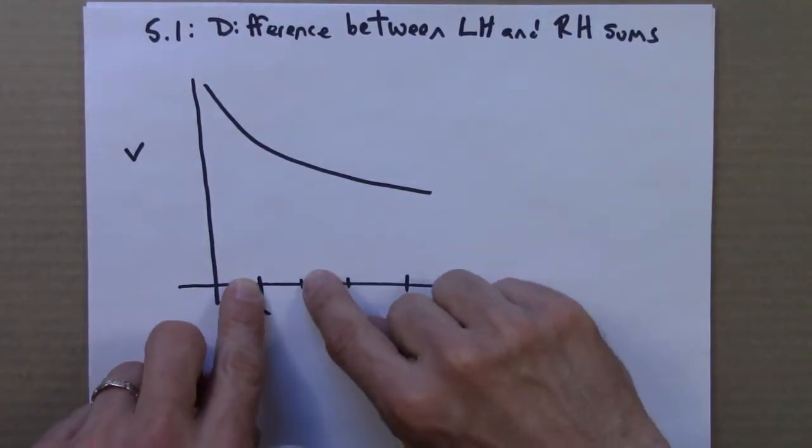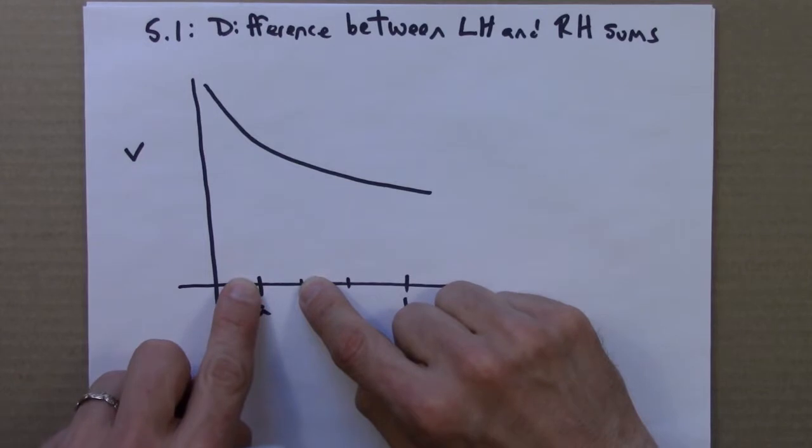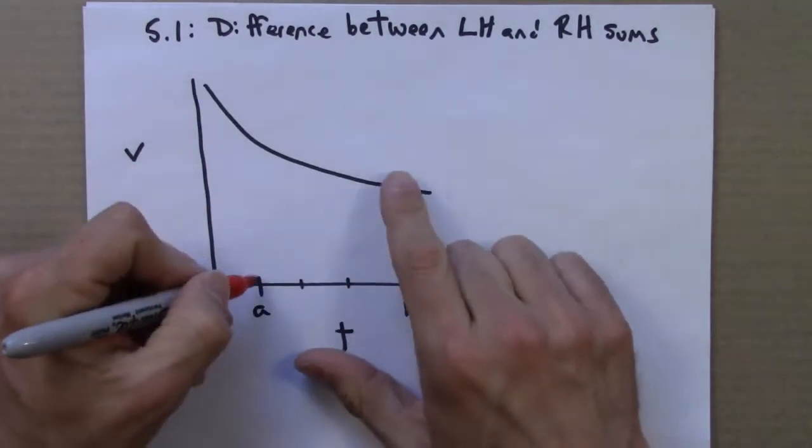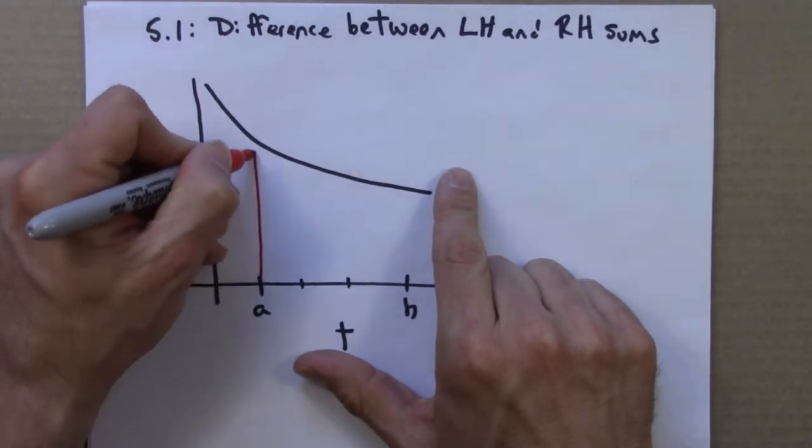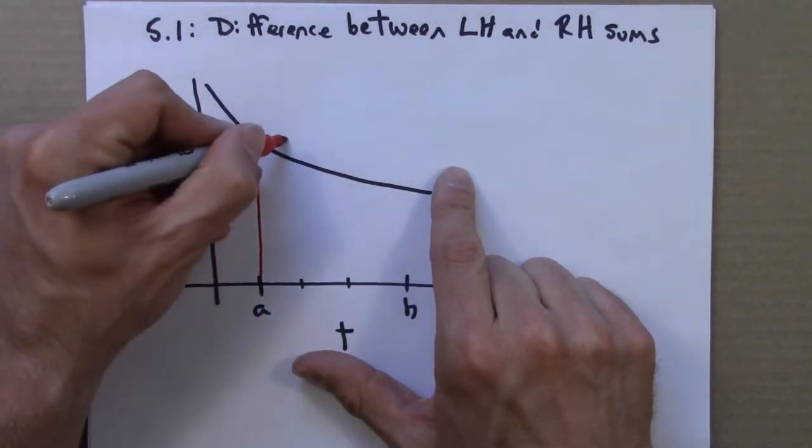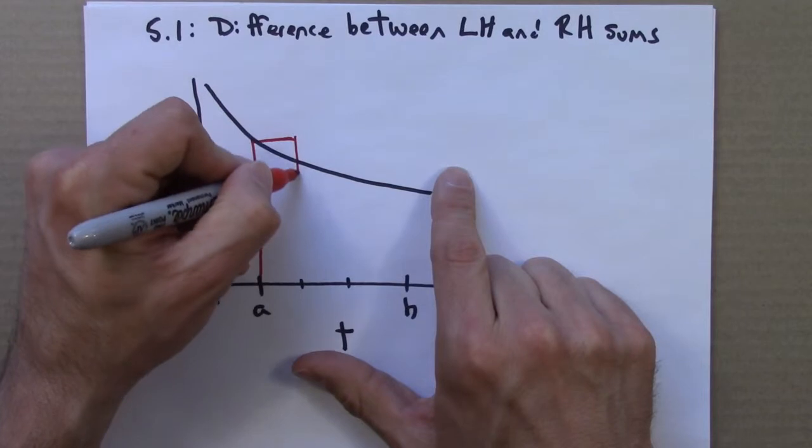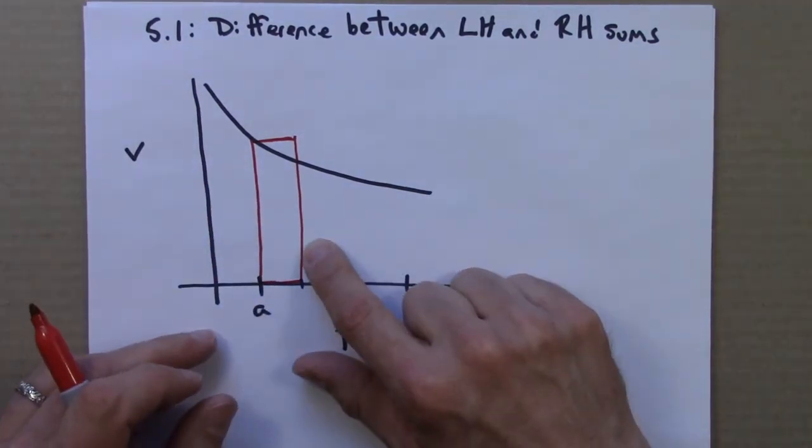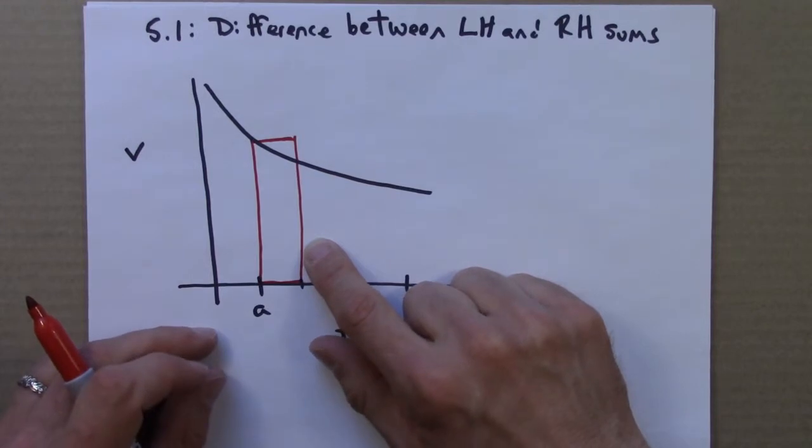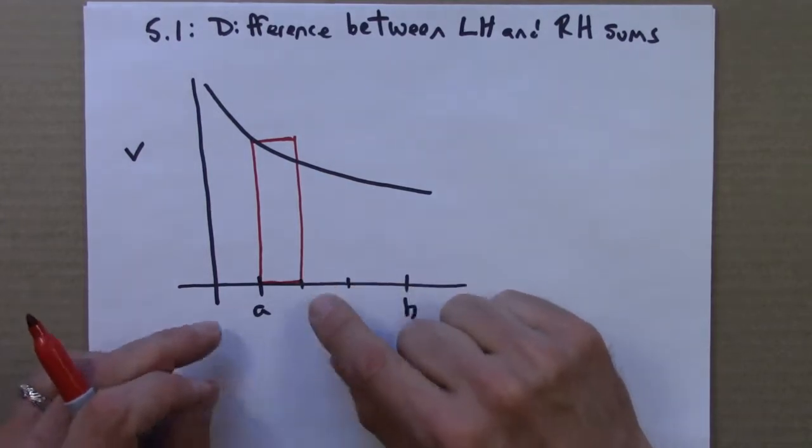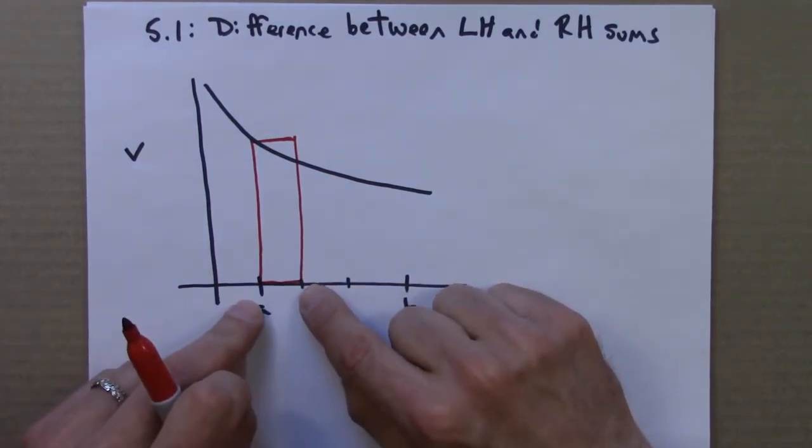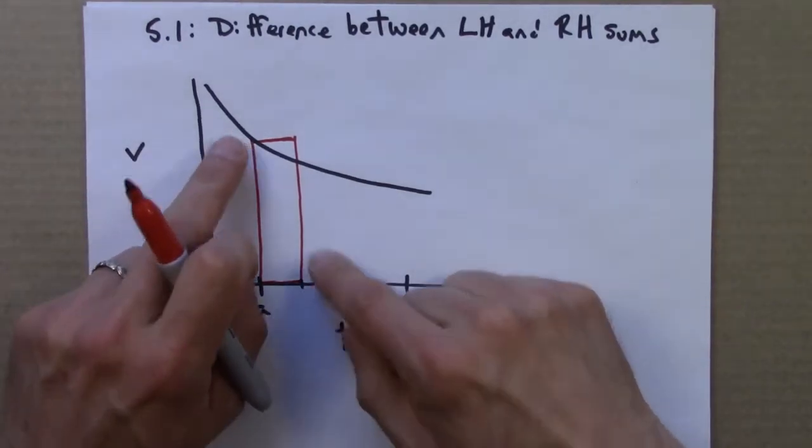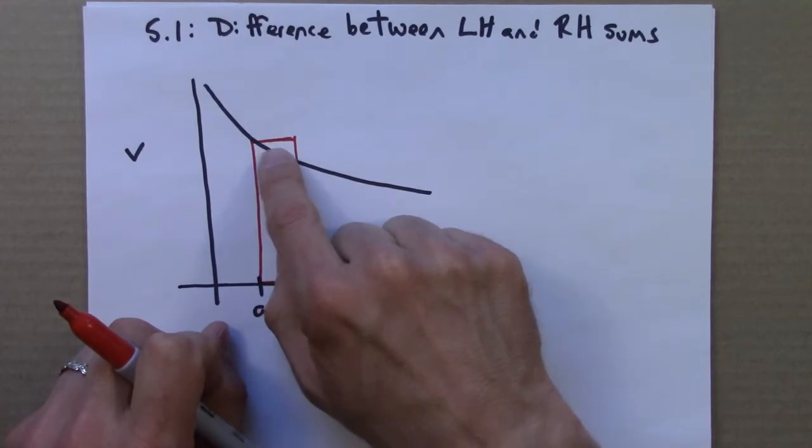And let's do a left-hand sum first. And so the left-hand sum says we're going to pretend that the cat is going at the left value all the time. And so as we've seen, that's going to give us a rectangle like this. So the area of this red rectangle is the distance that the cat has moved from time a to time here, between my two fingers, in this time interval, under the fiction that it's actually moving at this constant speed.